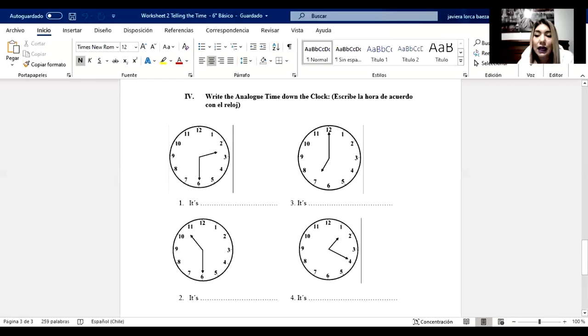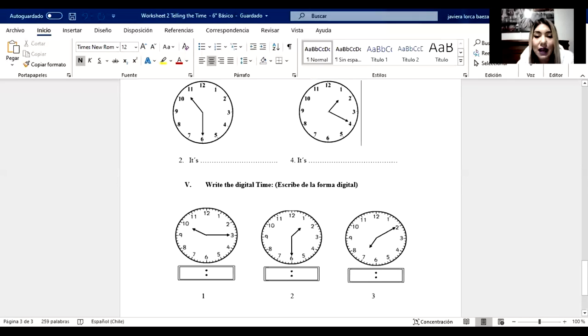And the last one, exercise five, write the digital time. You have the clock here. Look at the clock. Look at the time. And write in digital time. Esta es un poquito más fácil porque acá ya vas a tener que ver el reloj. Y la vas a escribir de la forma digital. With numbers. Don't use words here. Only with numbers. Acá solamente ocupamos números.